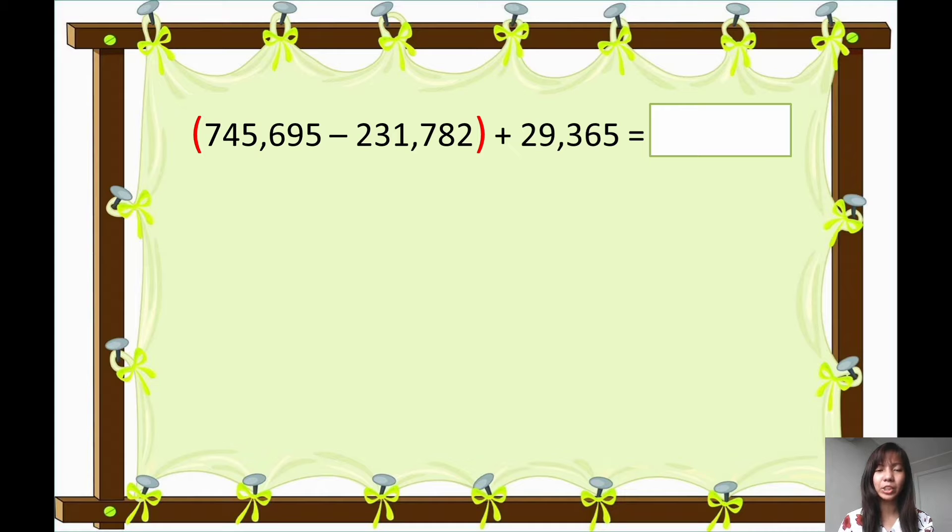So let's have an example. In combined operations, it is called combined operations because we have more than one operation. So in this example we have subtraction and addition. All right, so we have two operations. All right, so how are we going to solve this?